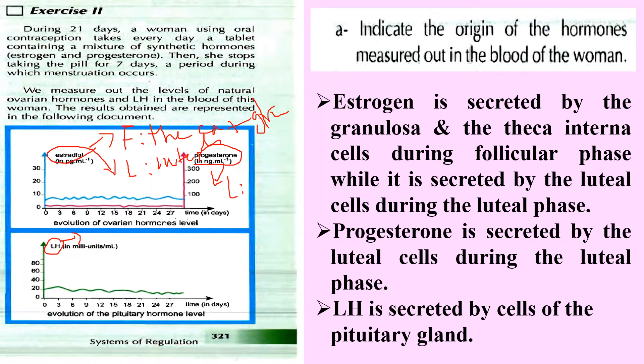Progesterone is secreted only in the luteal phase by the corpus luteum or luteal cells of the corpus luteum. LH is secreted by the pituitary gland cells. So estrogen is secreted by granulosa and theca interna during the follicular phase. In the luteal phase it is secreted by the luteal cells. Progesterone is secreted by the luteal cells in the luteal phase. LH and FSH are secreted by the pituitary gland.